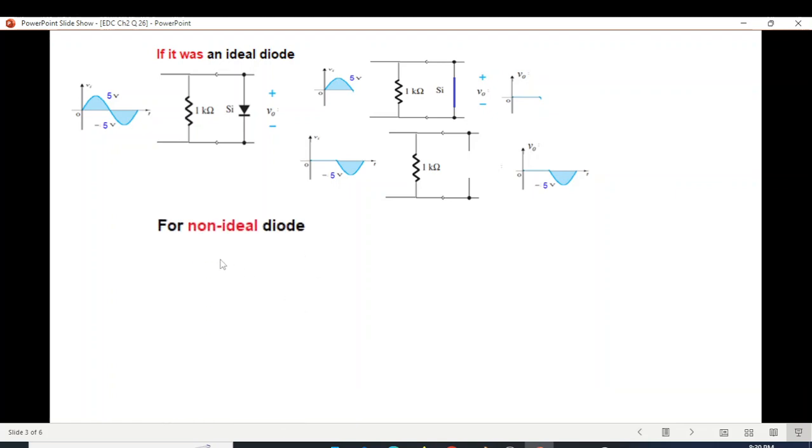Now, what will happen for the non-ideal case? Now we know that in non-ideal case, the diode is replaced by 0.7 volt. Here it was replaced by short circuit. In non-ideal case, it will be replaced by a battery of 0.7 volt. So no matter what is the positive input, this voltage will be 0.7 volt. It has to be more than 0.7 volt, of course. For that, the output will be 0.7 volt.